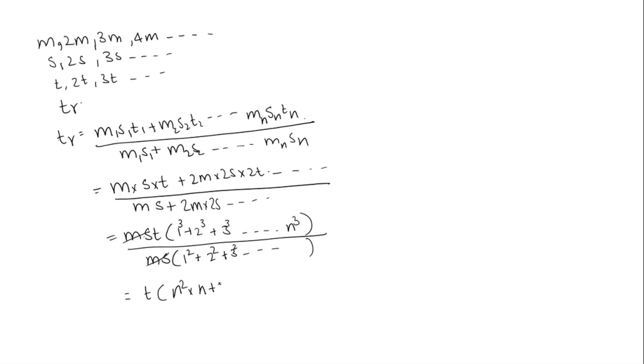And the formula for 1 squared plus 2 squared plus 3 squared and so on till N squared is N times N plus 1 times 2N plus 1 divided by 6.